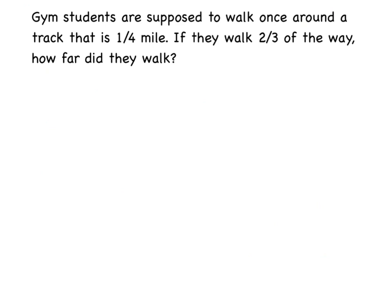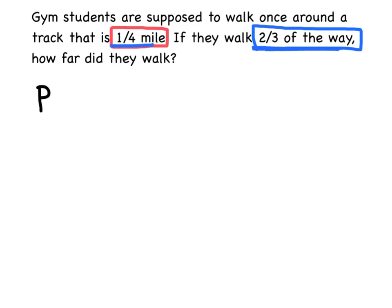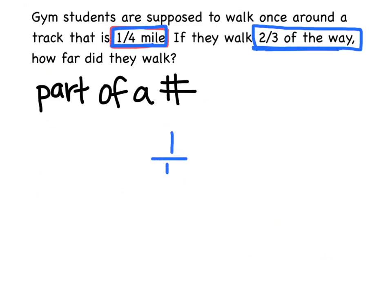Here's our next problem. It says gym students are supposed to walk once around a track, and the track is a fourth of a mile — I'm going to underline that, that's the total one lap around the track. Now it says if the students walk only two-thirds of the way, so they don't go all the way around the track, they only go two-thirds of the way. How far did they walk? The whole track is a fourth, and they just walked part of it. Whenever you're trying to find part of a number, you can multiply.